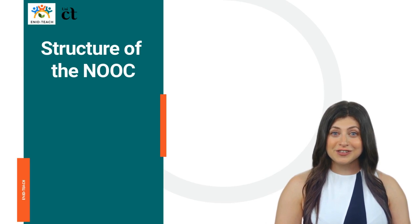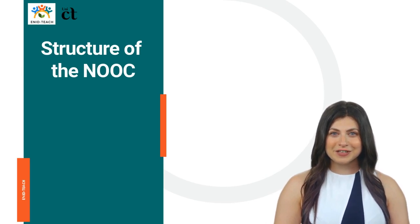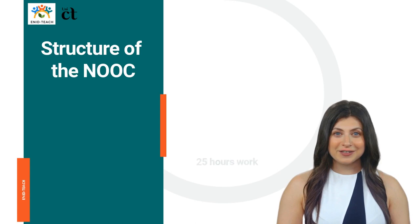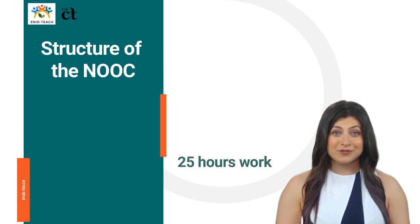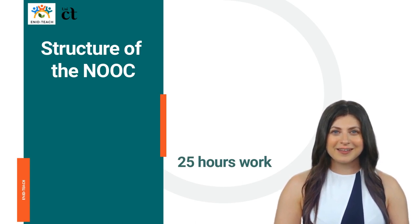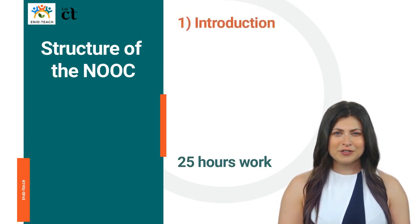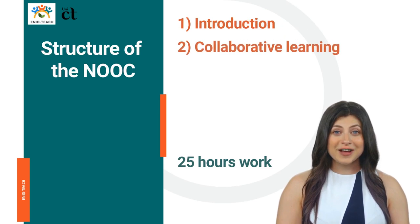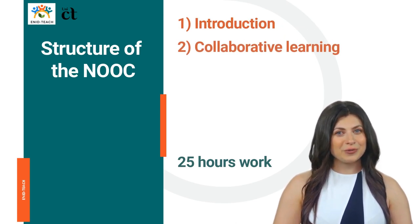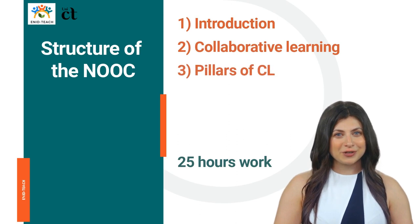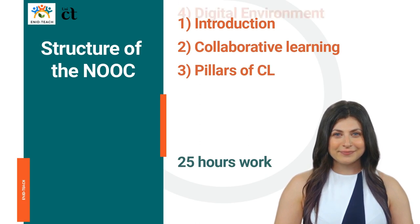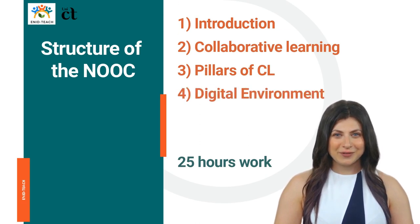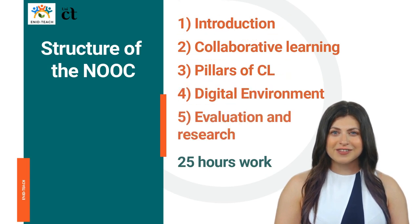This online course is structured in five units. Each unit is divided into two topics and provides a total of 25 hours of work. Each topic is organized in micro-lessons followed by exercises, activities, and other resources. The five topics will focus on: Introduction to the course; Collaborative learning, with some basic ideas about this learning methodology; Distributed cognition and computer-supported collaborative learning, as pillars of the collaborative environment; Digital environments and designing for online; and Evaluation and research.